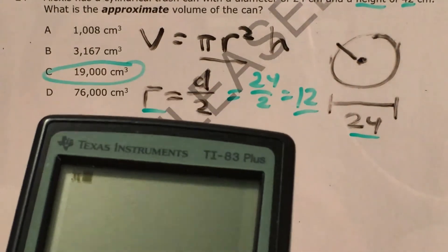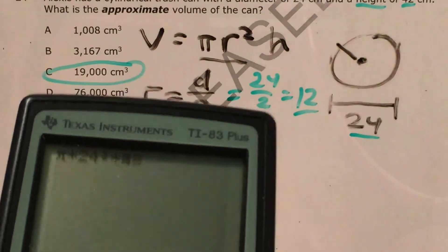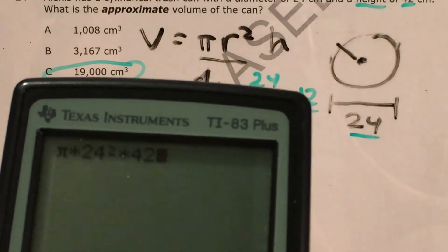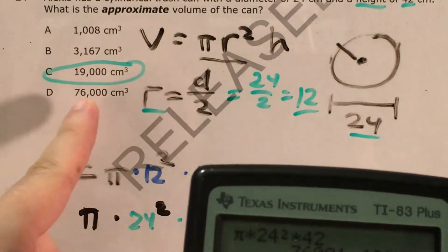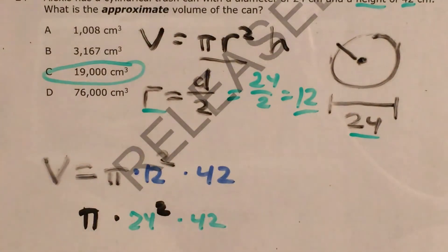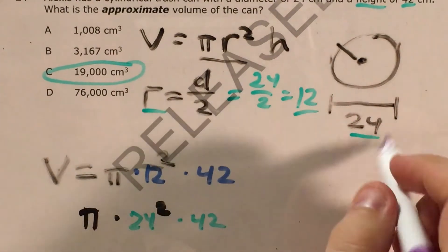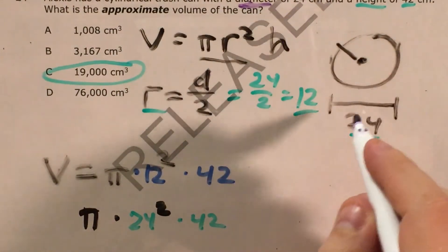Well, I can type it in the same way, pi times 24 squared times 42, and when I press equals, it gives me almost exactly 76,000 centimeters. So the person who made this question actually put this trick answer in there, expecting some people to forget that 24 is your diameter and not your radius.